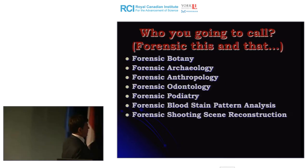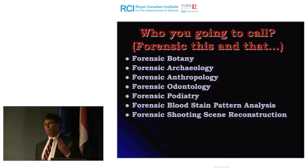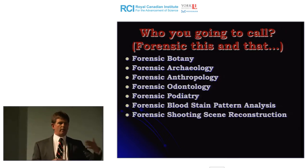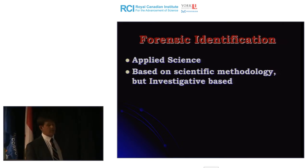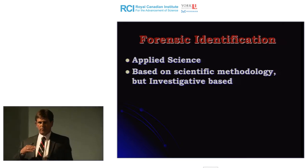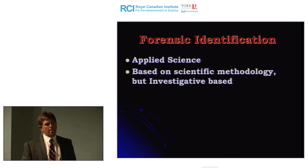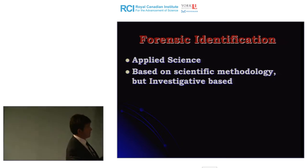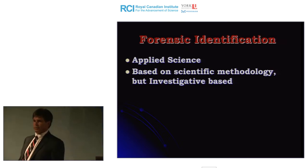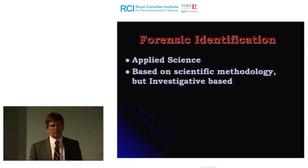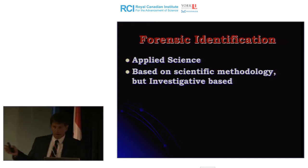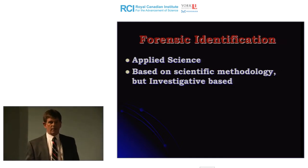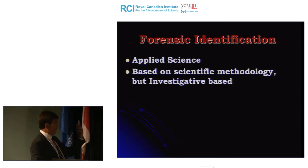Forensic identification is more of an applied science — using scientific methodology in the advancement of crime scene investigation. Almost exclusively in Canada, Forensic Identification Officers, or FIOs, are police officers. There are only about 1,400 in the country, around 350 in Ontario. All police agencies are required to have them — it's mandated by the provincial government under the Police Services Act, which says agencies 'shall' — not 'may' — ensure forensic identification is included in their mandate.